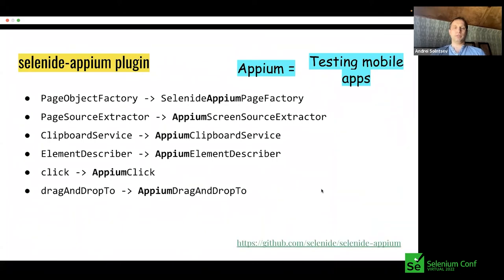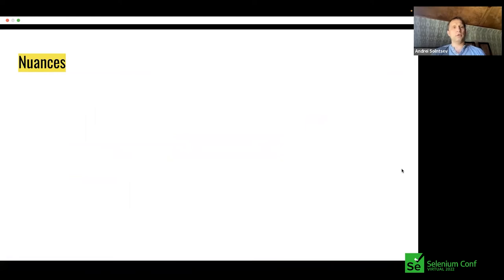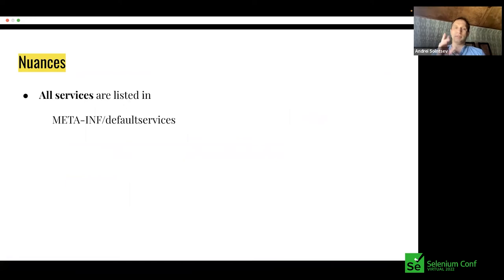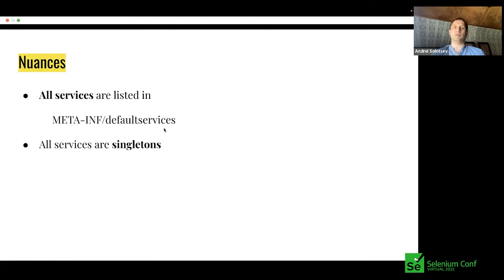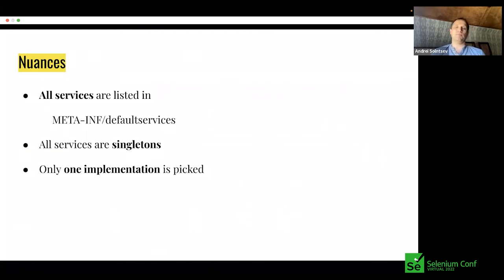There are some technical nuances worth mentioning. Every framework that uses the standard Java ServiceLoader pattern customizes it further — ServiceLoader is quite low-level and doesn't answer all questions. For example, regarding default implementations: in Selenide, we created a separate META-INF/default-services folder where all default implementations live, so you can look there to discover what services are possible to override. In Selenide, all services are singletons and Selenide will always pick only one implementation, compared to Selenium which can pick multiple implementations in some cases.